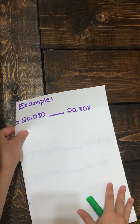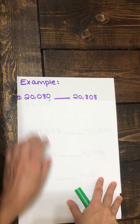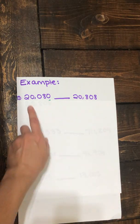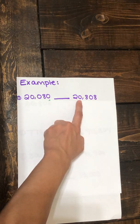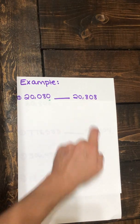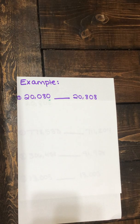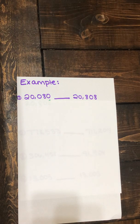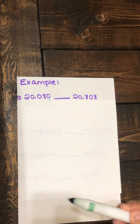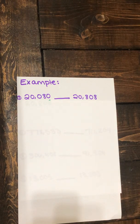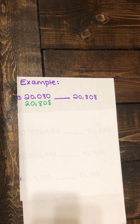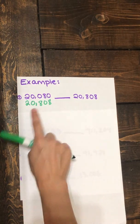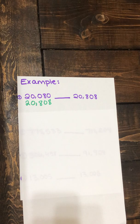Example number one, we have 20,080, and we're going to be comparing it to 20,808. One strategy you can use to compare numbers is line them up vertically, so you can compare each place value. So I've done that for us already. All I did was take one of our numbers and just rewrite it up underneath the other number.